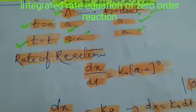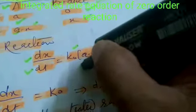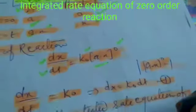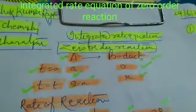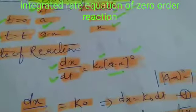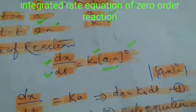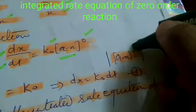Now rate of reaction according to law of mass action: dX upon dT equal to K0 times A minus X to the power 0. As we are treating zero order reaction, the exponent will be zero, and we know that if the exponent is zero then the value of that term will be equal to 1.